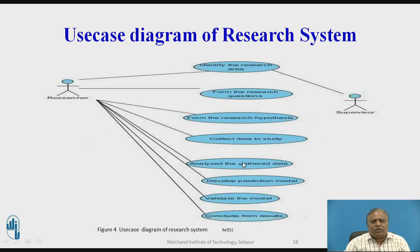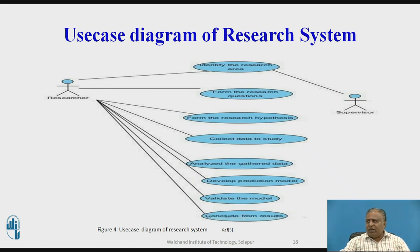Next, this is the use case diagram of a research system, where the researcher and the supervisor are the actors. The use cases include: identify the research problem, form the research question, form the research hypothesis, collect data, analyze the gathered data, develop the prediction model, validate the model, and conclude the results.